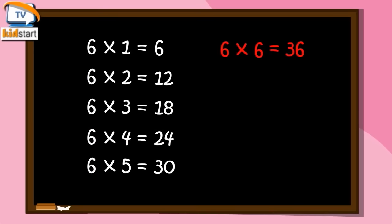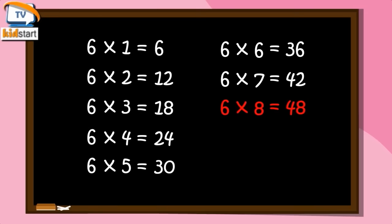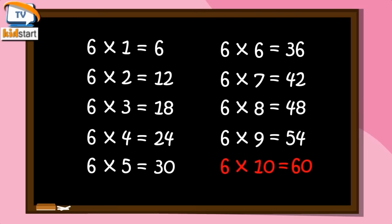Six sixes are thirty-six. Six sevens are forty-two. Six eights are forty-eight. Six nines are fifty-four. Six tens are sixty.